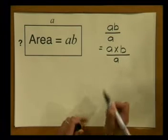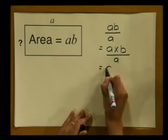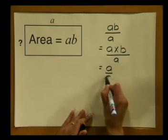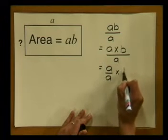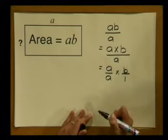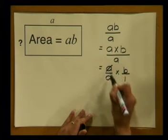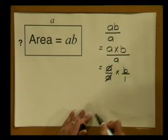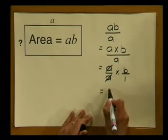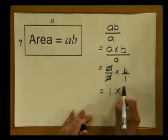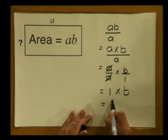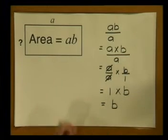Now if we think about it, another way of writing it is A divided by A, times B divided by 1. And we should be able to see that the A's would cancel out, and we are going to be left with 1 times B, which gives us B. Here we have done the exact same thing as what we did with the numbers — we have cancelled the common factors.